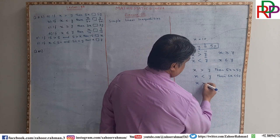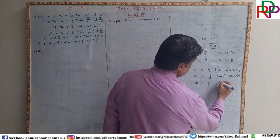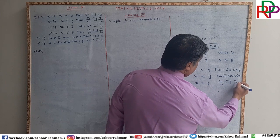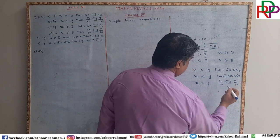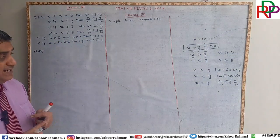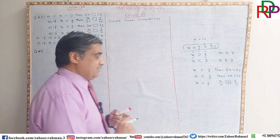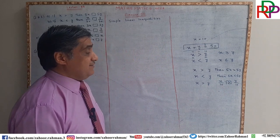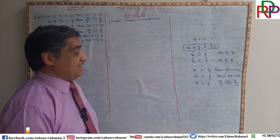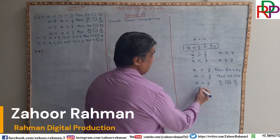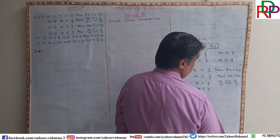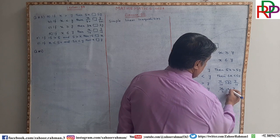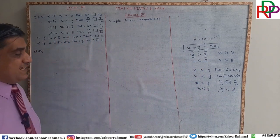Similarly, if x is greater than y, what about if we divide both sides by 10? Again, the inequality sign will not change. If you are multiplying or dividing both sides by a positive number, the inequality sign will remain intact. Similarly, if x is less than y, then x divided by 2 and y divided by 2 will also yield the same sign.